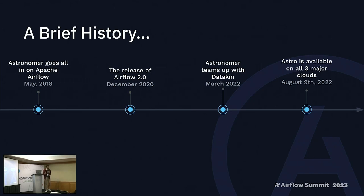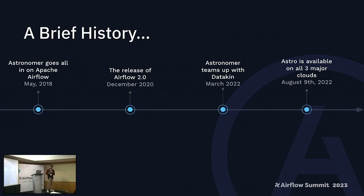For those of you at Data Council last year, you saw firsthand that we announced we acquired DataKin — the creators of Open Lineage — in March 2022. There are so many times I've talked to customers who said they really need help with orchestration, but now with all their data moving around they need lineage too. And only about a year ago were we actually available on all three major clouds — so now you can run Astro on AWS, GCP, and Azure.